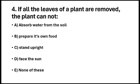Question number 4. If all the leaves of a plant are removed, the plant cannot. Option A. Absorb water from the soil. Option B. Prepare its own food. Option C. Stand upright. Option D. Face the sun. Option E. None of these. So the answer is option B.